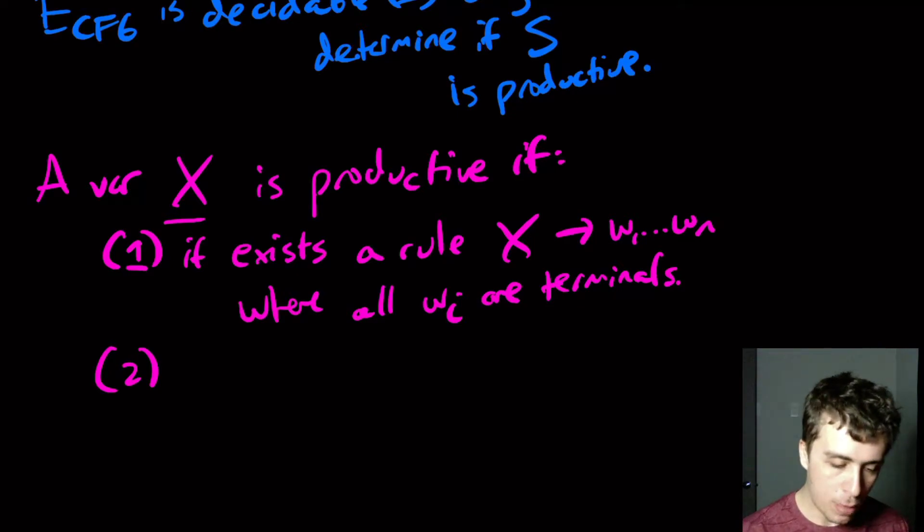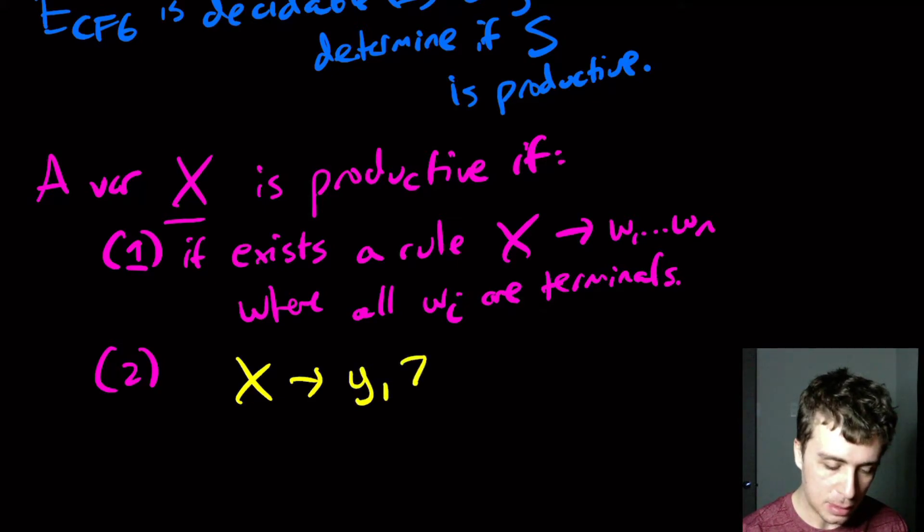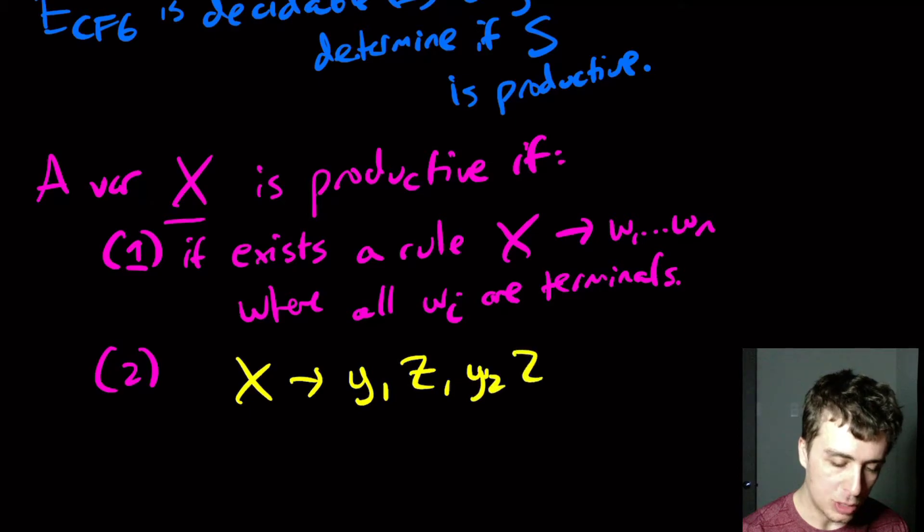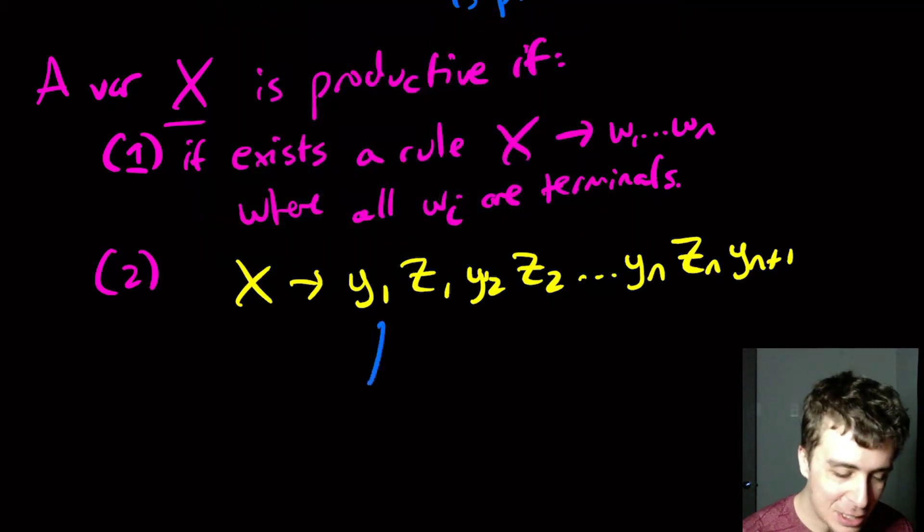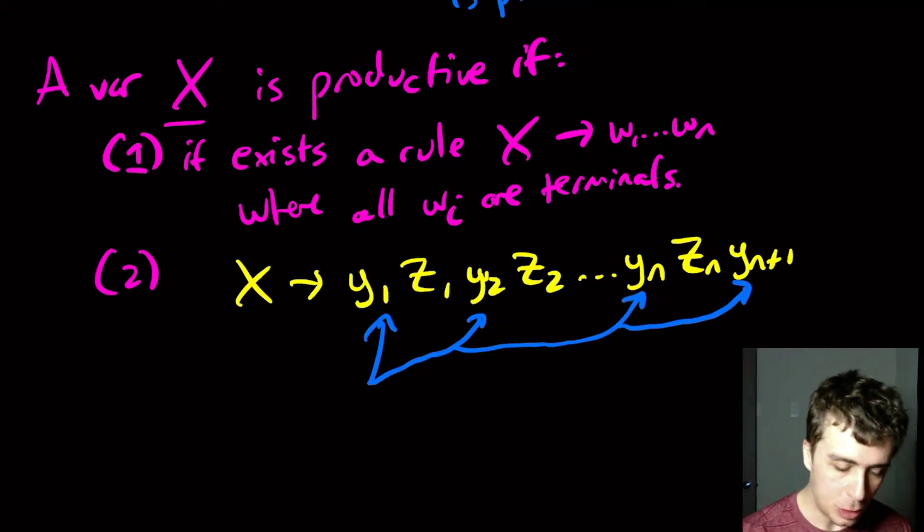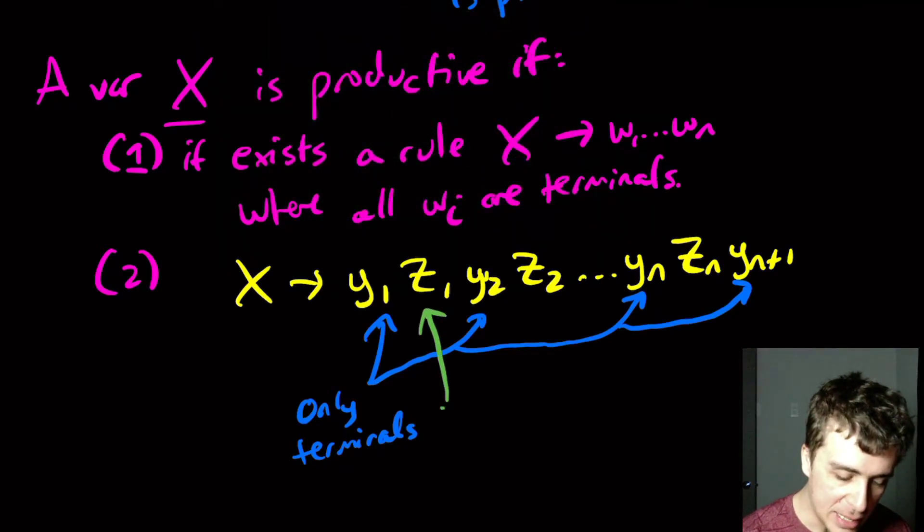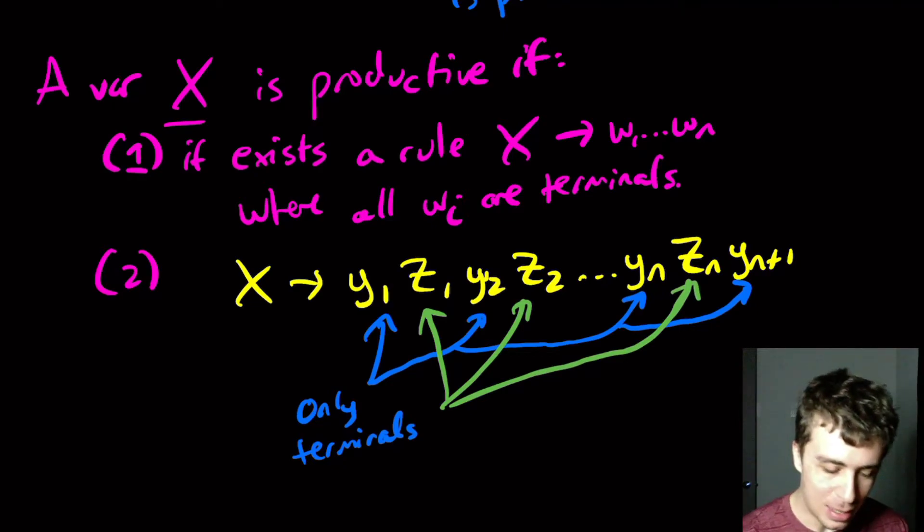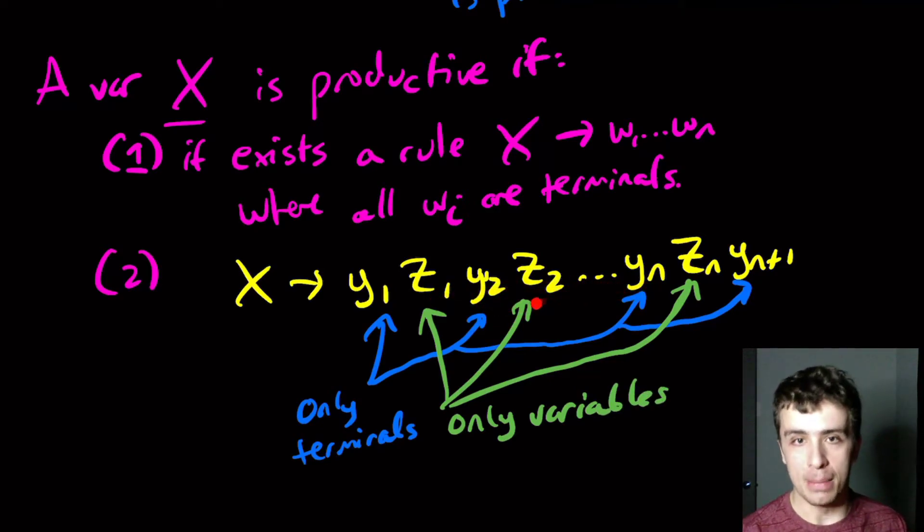So what if we had a rule of the form, x goes to, let's see, let's call it y_1, z_1, y_2, z_2, et cetera, y_n, z_n, and then y_{n+1}. And why am I writing it in this fashion? I'm actually doing this on the fly. So the y strings here all throughout, so these ones are going to be only terminals. And all of the z's here, I'm not sleeping, I promise, are only variables.